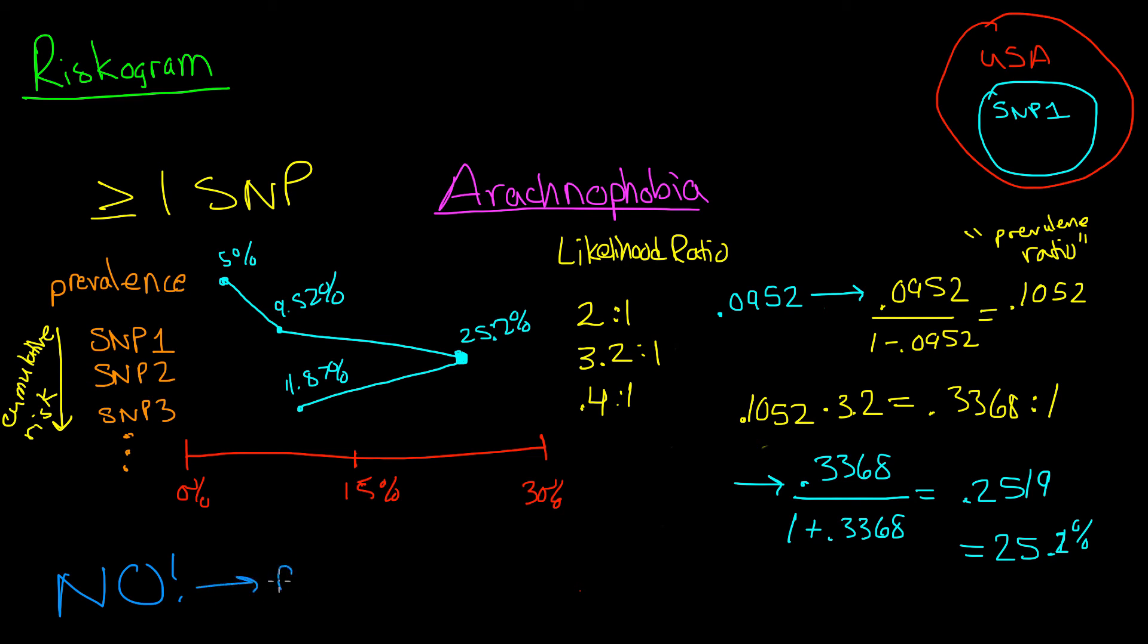So we need to look at family history and lifestyle. These are major contributors to a person's chance of getting a disease, especially for conditions like heart disease, diabetes, and arthritis.